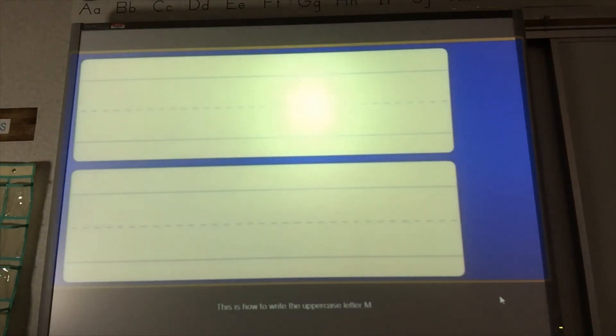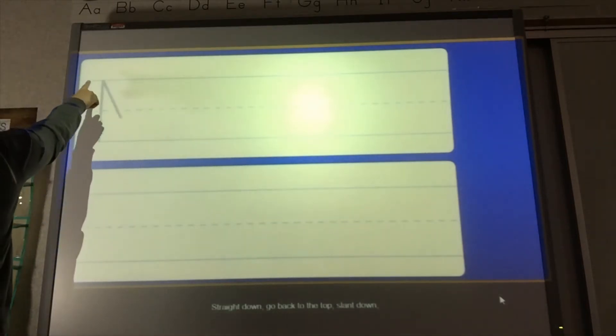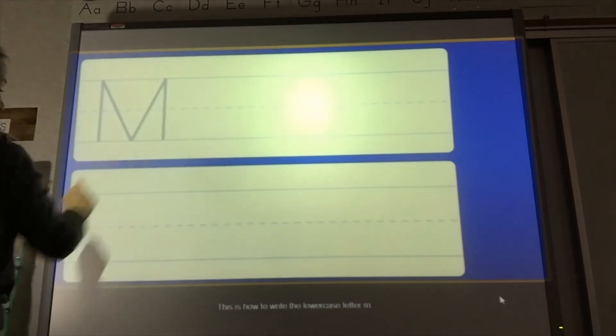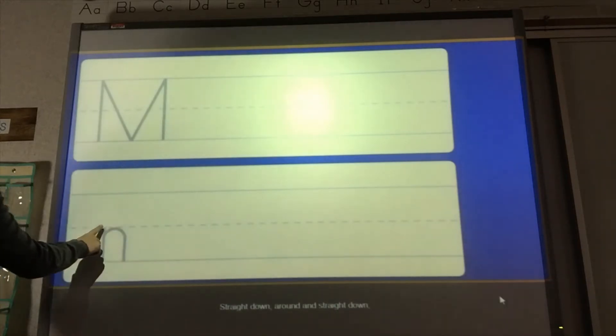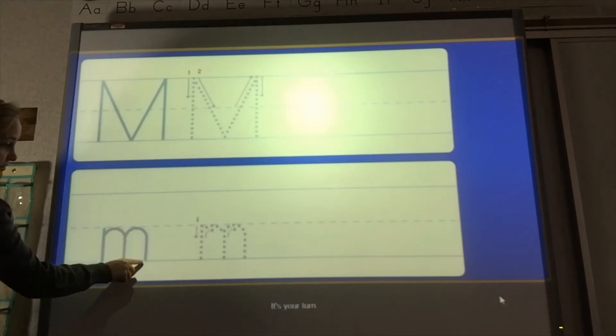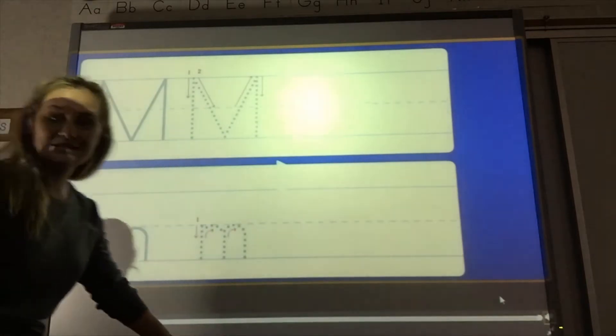Here's how to write the uppercase letter M. Straight down. Go back to the top. Slant down, slant up. Down again. Here's how to write a lowercase M. At the dotted line, straight line down, and then two little humps. Let's give it a try.